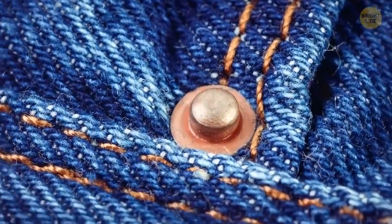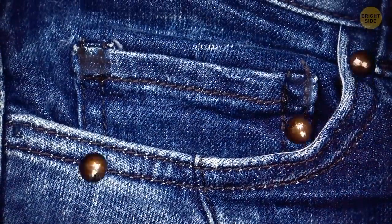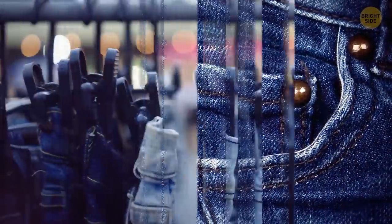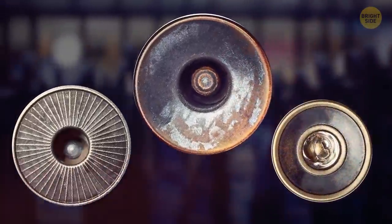Jeans have had those metal rivets ever since they were invented. Jacob Davis, the man who made the first pair of jeans, added copper rivets to those spots where the pants were more likely to rip to make them stronger. Today, they have more of a decorative purpose because they're distinctive and traditional for jeans.